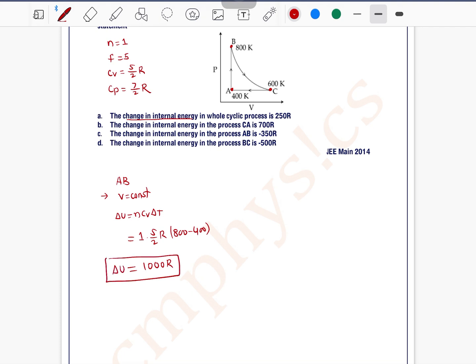Now we will deal with process CA. In process CA, the pressure is constant, meaning isobaric process. In isobaric process, delta U can be written as n Cv delta T. This equals 1 into Cv, which is 5 by 2 R, and the change in temperature is 400 minus 600. This is minus 200 by 2, minus 100, minus 500 R. So delta U equals minus 500 R in process CA.